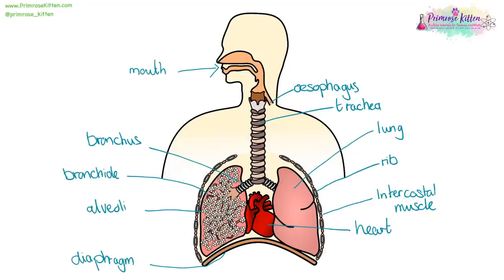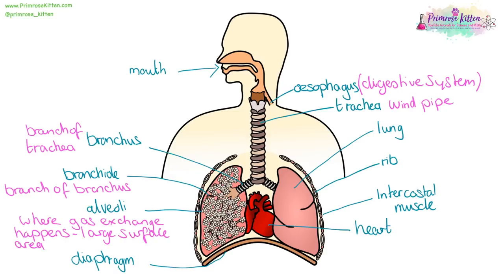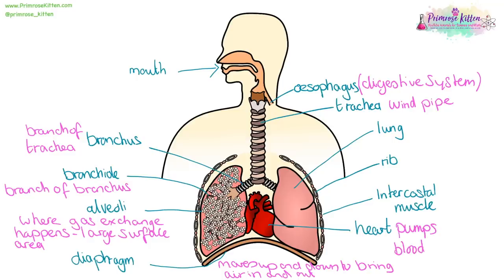Here we have the respiratory system. Air goes in through the mouth or nose, down into the trachea (the windpipe), then into the bronchus, which is a branch of the trachea, into the bronchioles, which branch further, and into the little grape or cauliflower shaped alveoli where gas exchange happens — they have an incredibly large surface area. Your diaphragm moves up and down to bring air in and out. The heart pumps blood around the body. The intercostal muscles allow the rib cage to expand, and the ribs protect the lungs.